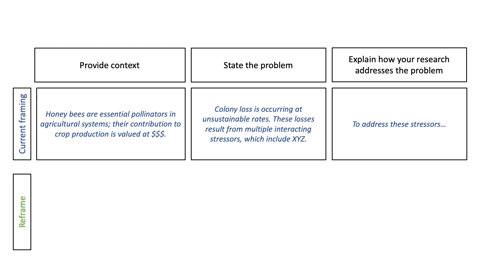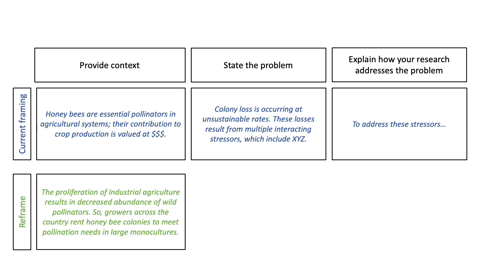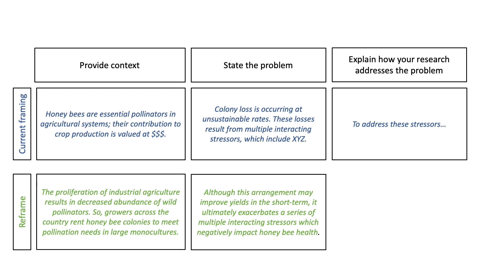A hypothetical reframe could look like this. We start by stating that the proliferation of industrial agriculture results in decreased abundance of wild pollinators, so growers across the country rent honeybee hives to meet pollination needs in large monocultures. We then describe the problem: although this arrangement may improve yields in the short term, it ultimately exacerbates a series of multiple interacting stressors which negatively impact honeybee health. Now that I've named industrial agriculture as a primary driver of colony loss, I must also acknowledge that my specific research focus is unlikely to make much of a difference in honeybee health outcomes absent structural change.